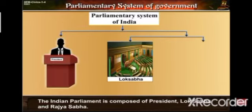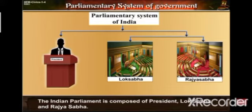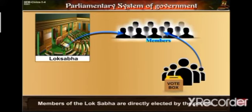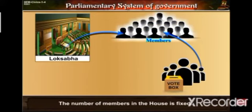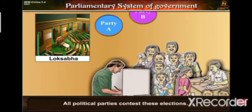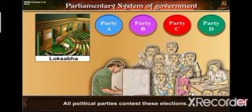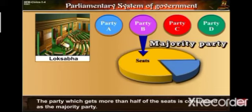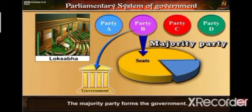The Indian Parliament is composed of the President, Lok Sabha, and Rajya Sabha. Members of the Lok Sabha are directly elected by the people. The number of members in the house is fixed, and elections to the Lok Sabha are held at regular intervals. All political parties contest these elections. The party which gets more than half of the seats is considered the majority party, and the majority party forms the government.